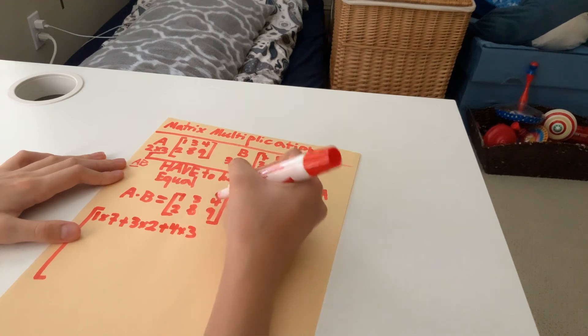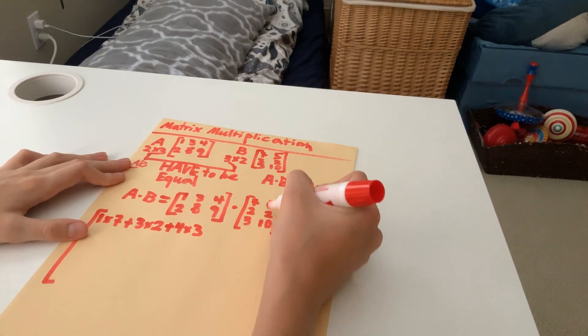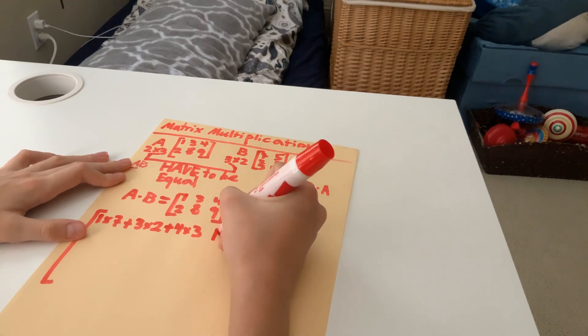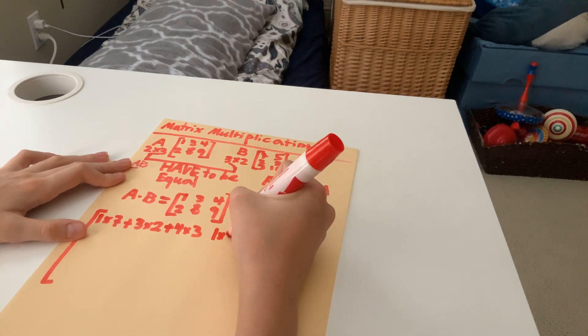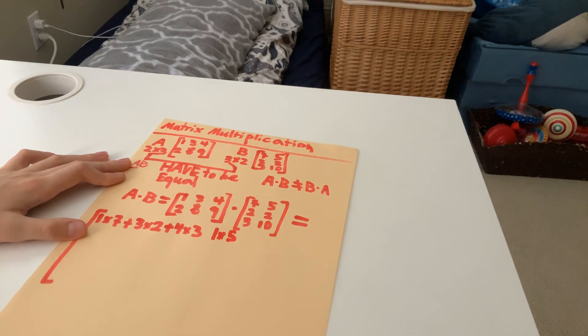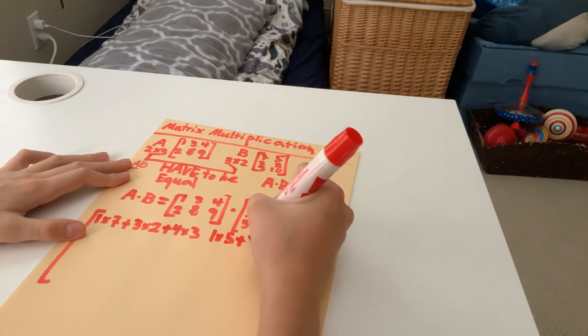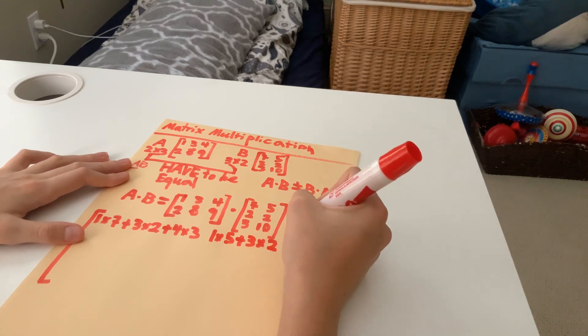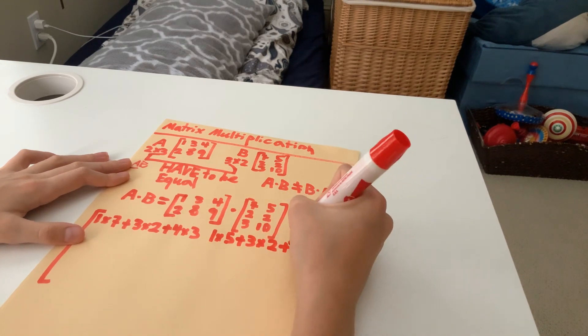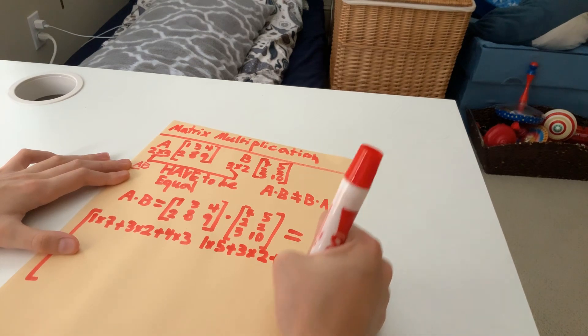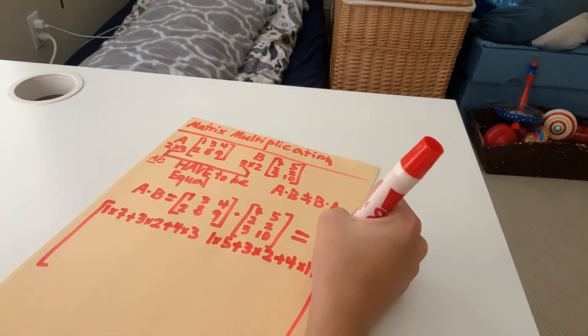So now, we want to stick to the same row here, but alternate to the second column. So 1 multiplied by 5 plus 3 multiplied by 2. Finally, plus 4 multiplied by 10. So that's our first row here. So I guess we can cut it off like this.